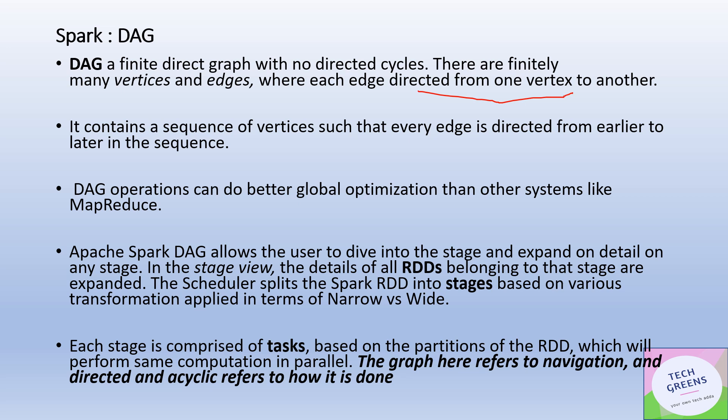The DAG mechanism helps to perform better global optimization compared to systems like Hadoop MapReduce. It helps in performing global optimization, and Spark's DAG allows the user to dive into any stage and see its details. On the Spark UI, we can see the details of all the RDDs belonging to a particular stage of execution expanded.